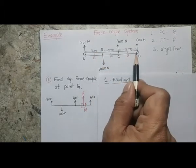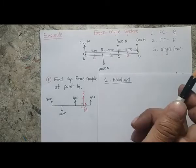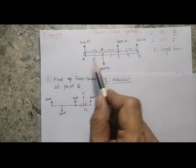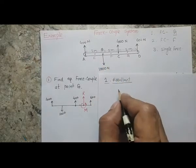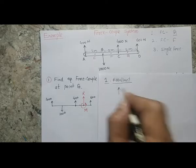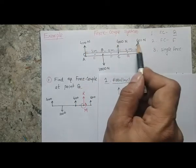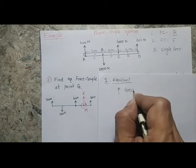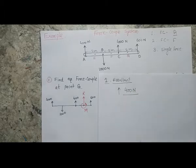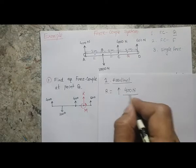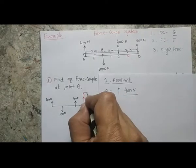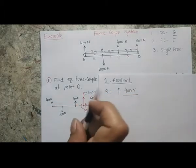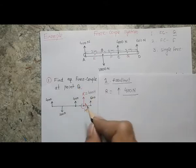In this problem, there are only vertical forces — no horizontal forces — which makes it a simple case. The resultant acts upward, and its magnitude is 400 + 400 + 600 − 1000 = 400 Newton. So the resultant force R is 400 Newton acting upward.